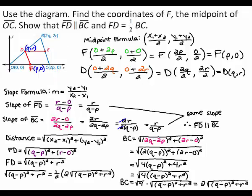Now, notice that the square root of the quantity (q minus p) squared plus r squared is equal to one half times 2 times the square root of the quantity (q minus p) squared plus r squared. Therefore, the length of segment FD is equal to one half times the length of segment BC.